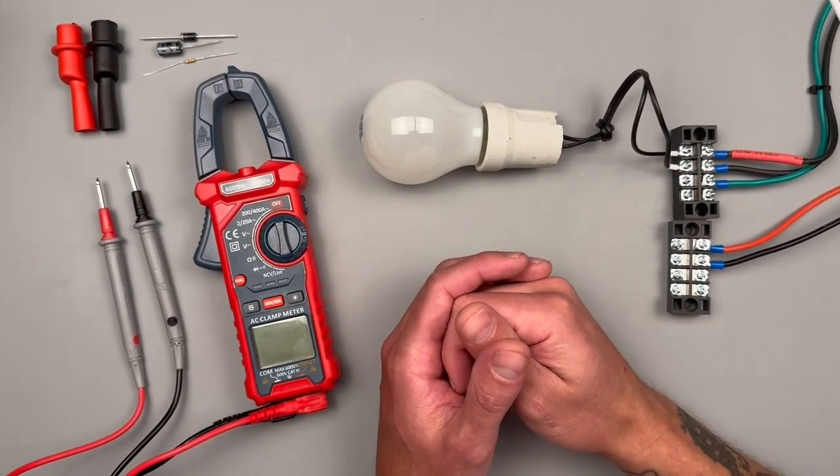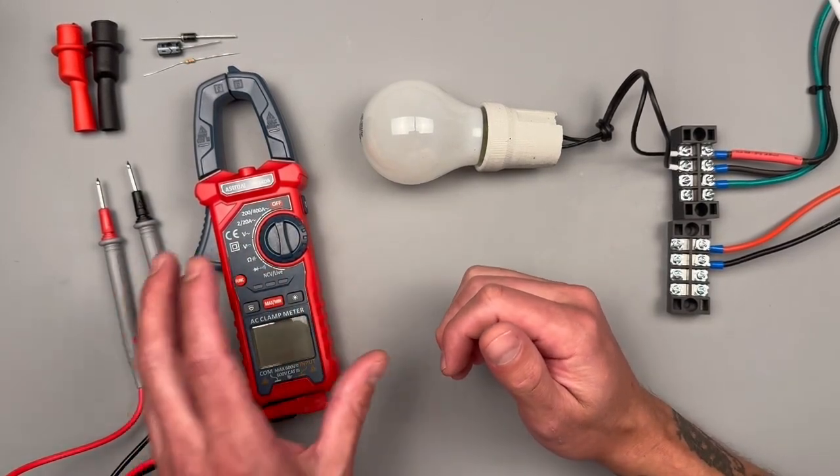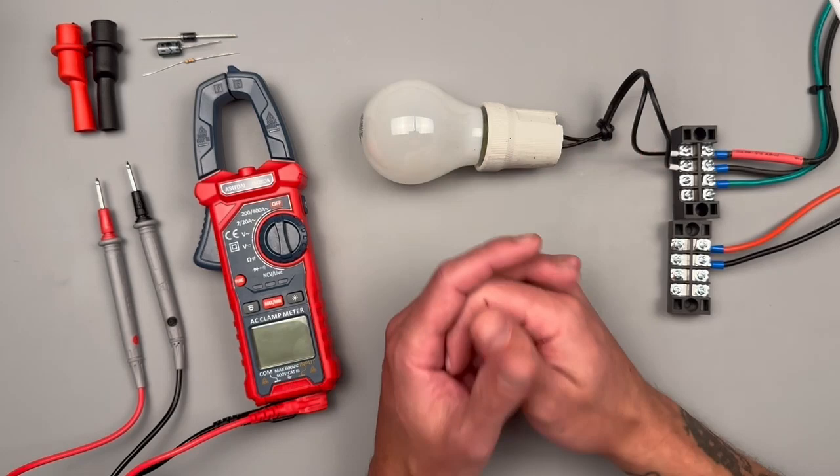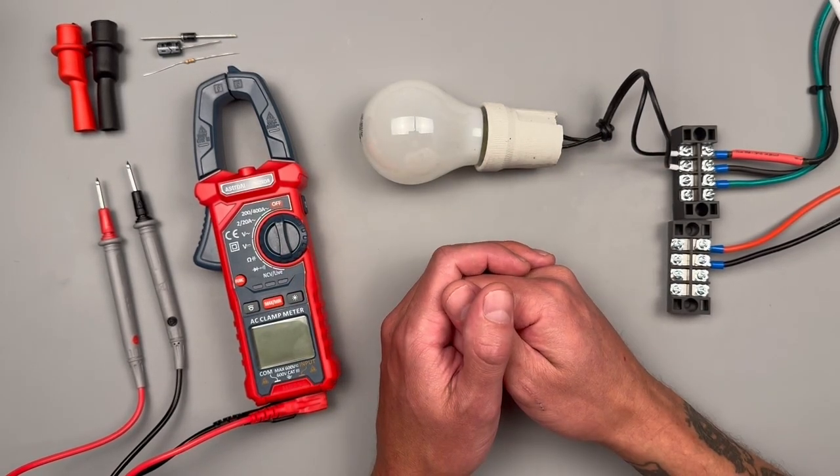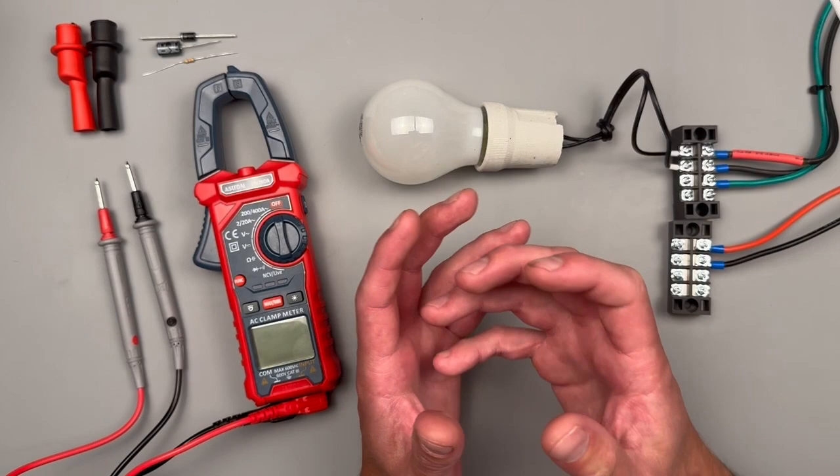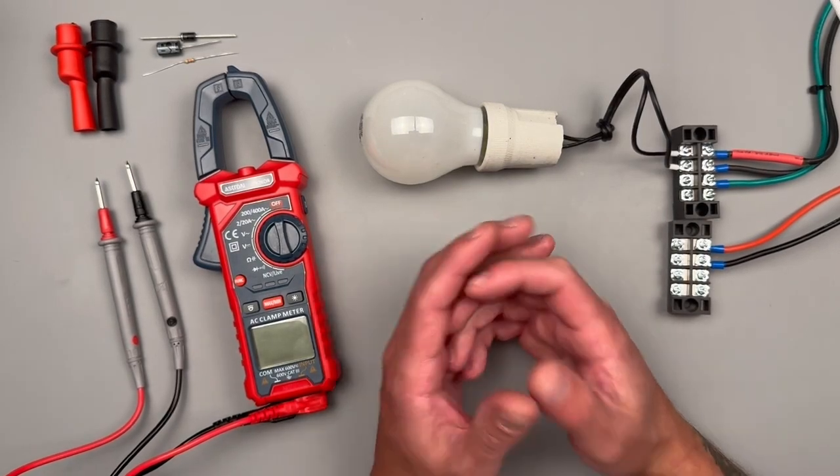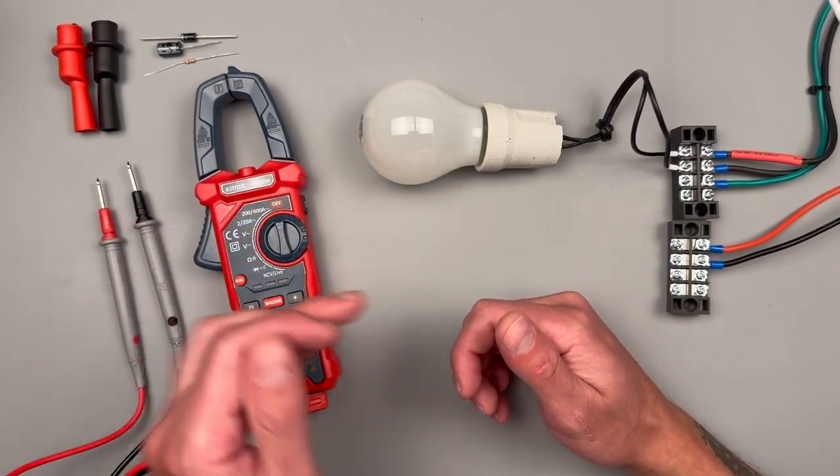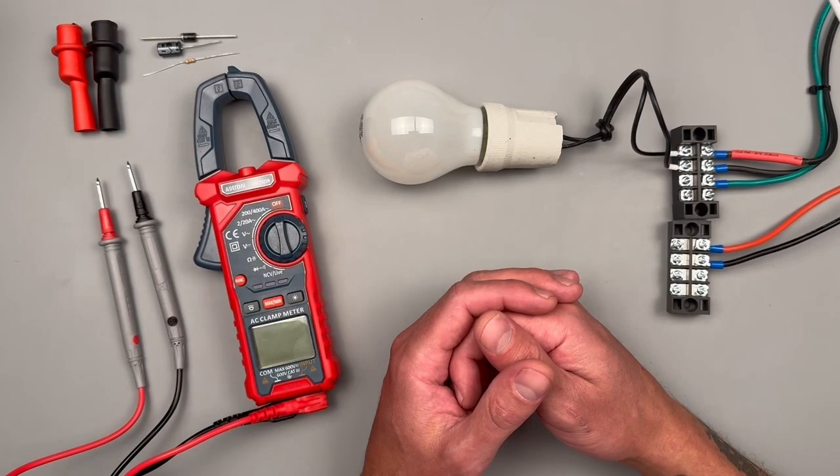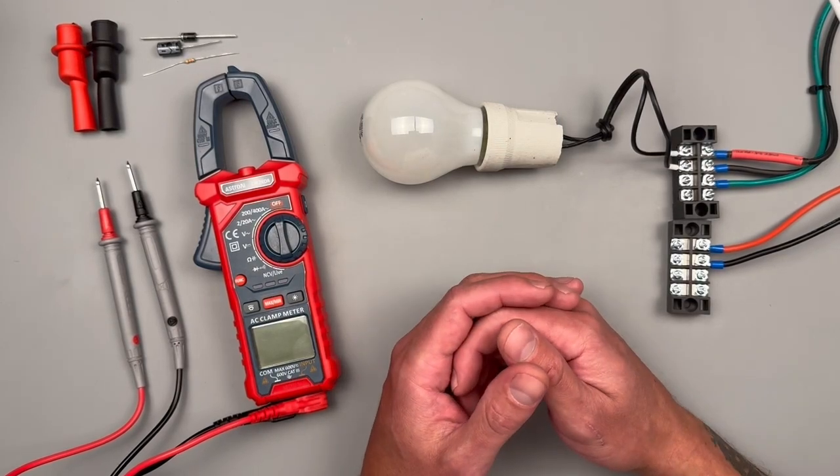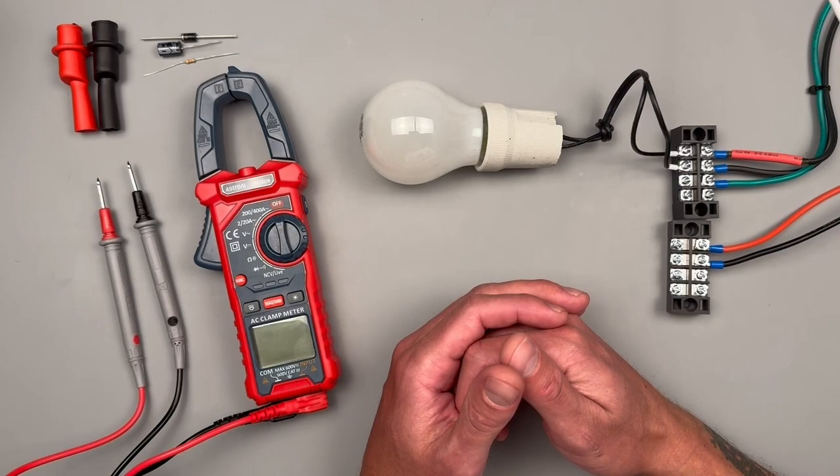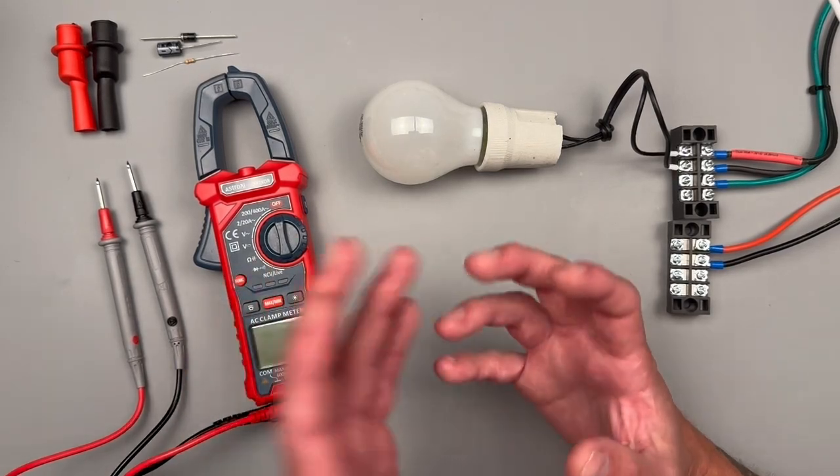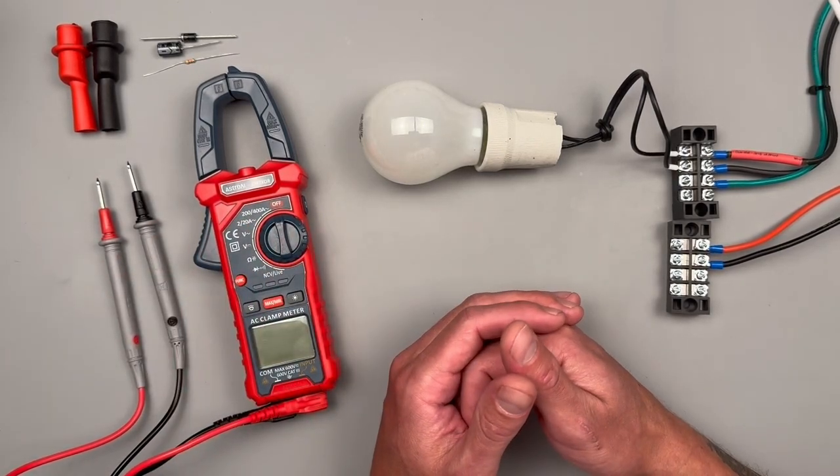Alright folks, we're going to be going over all of the settings and uses for this Astro AI CM2000R AC clamp meter. If you're a beginner with electronic measurements, this video should be for you. We'll talk about all the different settings, what the symbols mean, and some of the applications for this meter. I think if you're an RV or camper person, this would be a really great option. A homeowner, I think would work too.